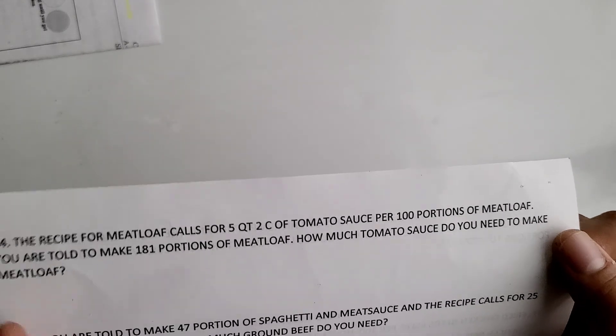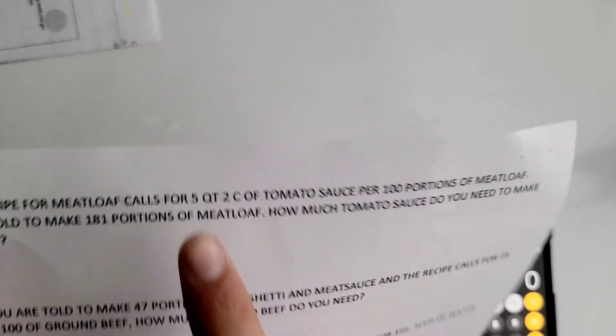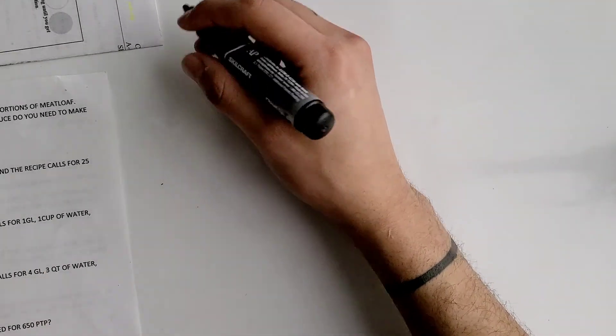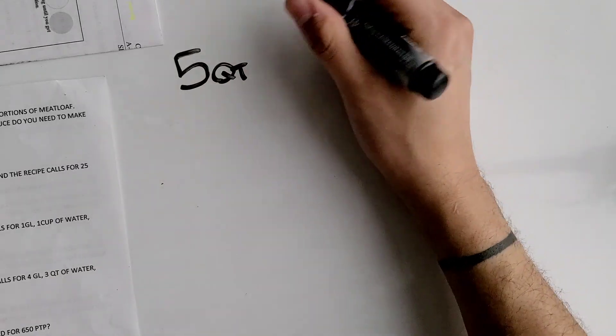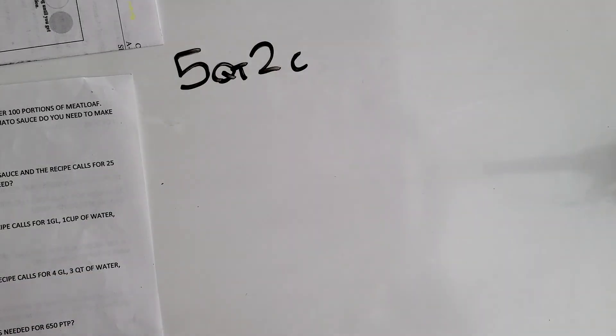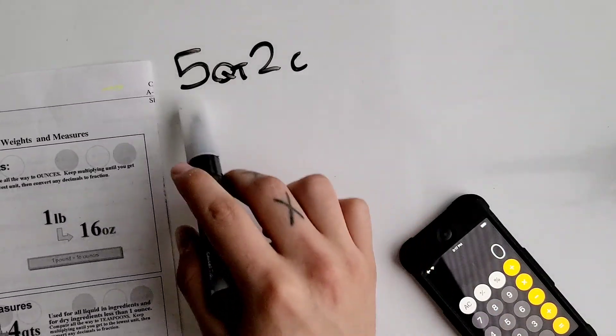First thing to do is we want to convert this mixed unit into a single unit. We got 5 quarts and 2 cups, so we're going to have to convert the cups into quarts.